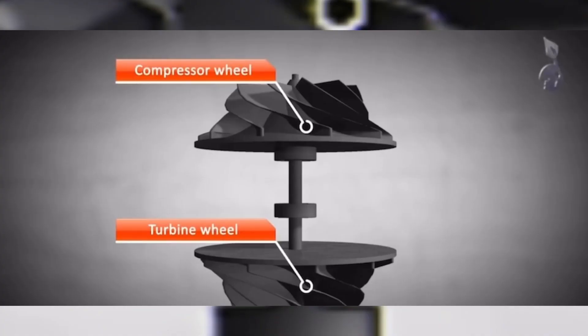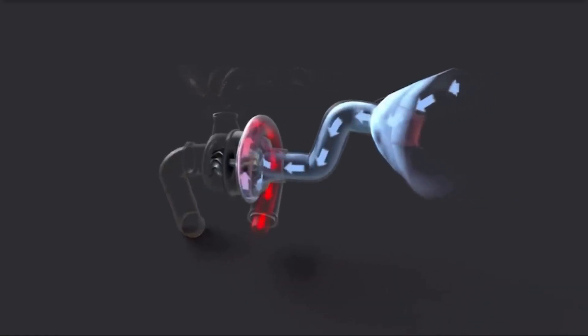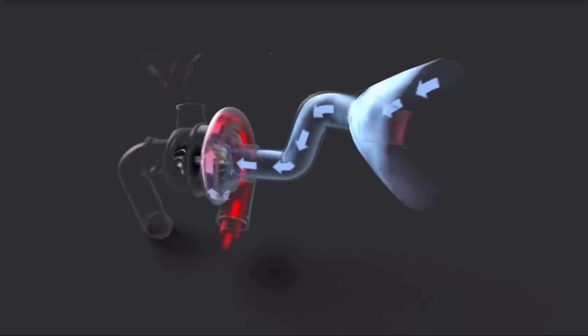Now I'd like to remind you that the turbine is connected to the compressor side via the shaft. As the turbine side spins faster, the compressor wheel also spins faster.